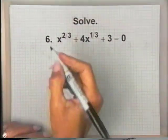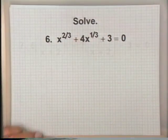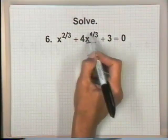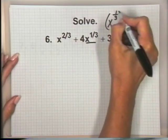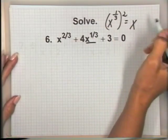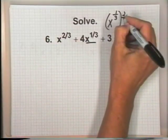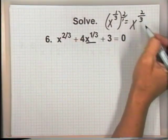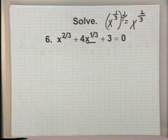For problem number 6: x to the 2/3 power plus 4x to the 1/3 power plus 3 equals 0. Let's check: if we take x to the 1/3 and square it, using the power of a power rule, 2 times 1/3 equals 2/3. So squaring x to the 1/3 gives x to the 2/3 — the variable part of the first term. This is an equation in quadratic form.